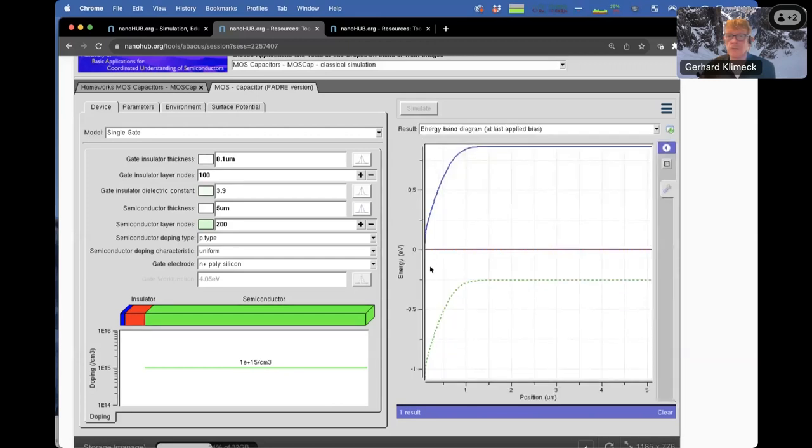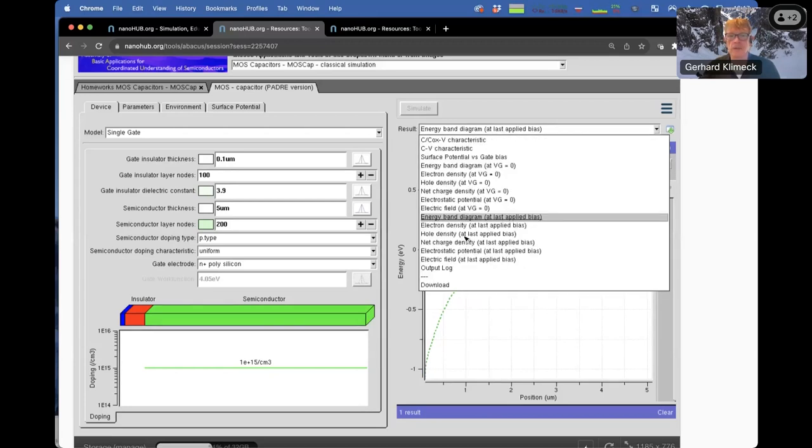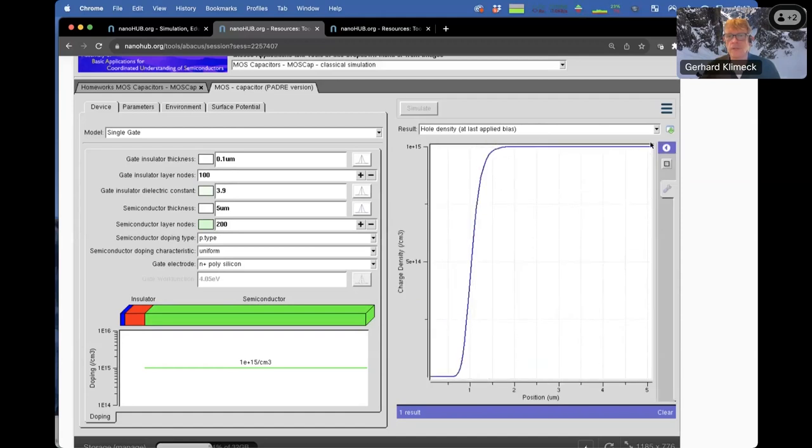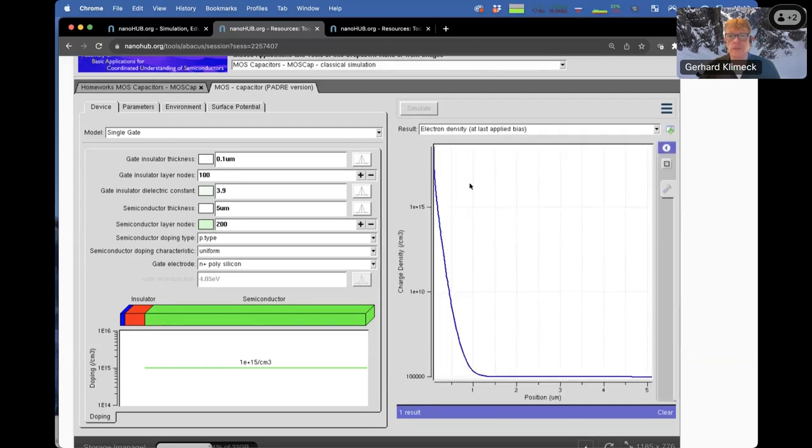We can now look at the band edge diagram at the last applied bias. You can see here's the p-type side, but we increased the bias such that you now are in inversion. Let's look at the hole density. Again, you have 1E15 here at the doping level. You have depletion here. The electron density should be significantly higher. There's a huge spike of electrons here. Then you have the electron density decrease. You're going up beyond actually the doping level. So we're in deep inversion. So that's good. We can see all the features that we expect to see.